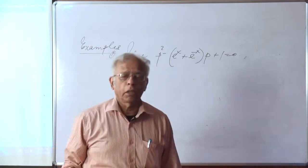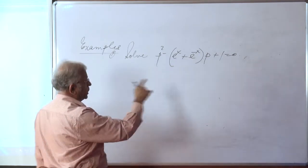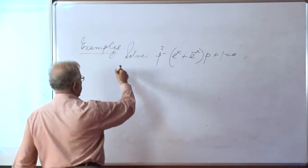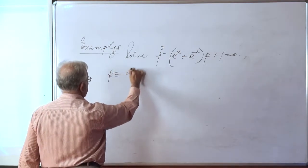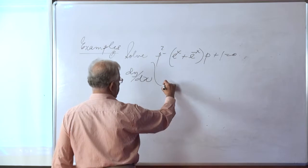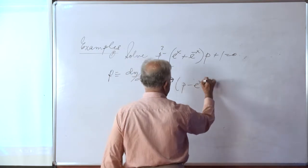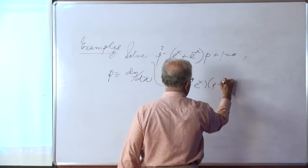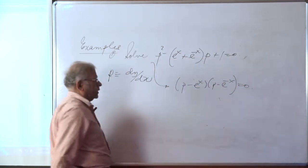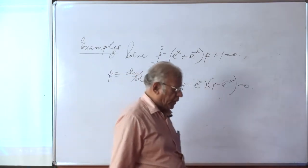Take an equation of the form just discussed. We will try to find P from this equation, and we remind ourselves that P stands for dy/dx. From here it is easy to see that this is nothing but (P − e^x)(P − e^{−x}) = 0. So either P − e^x = 0 or P − e^{−x} = 0.